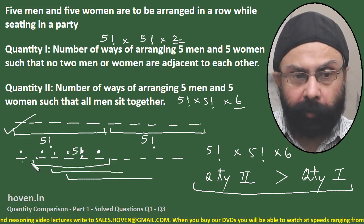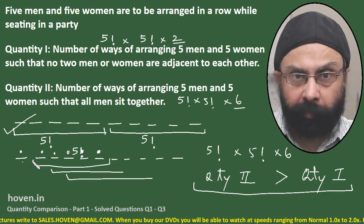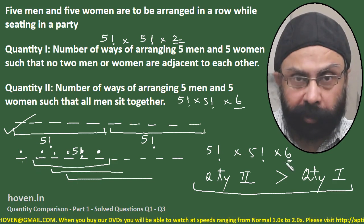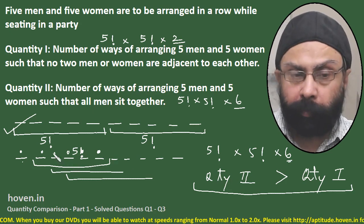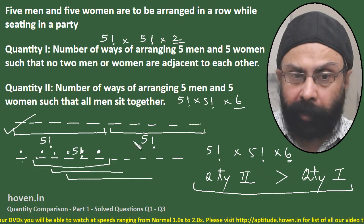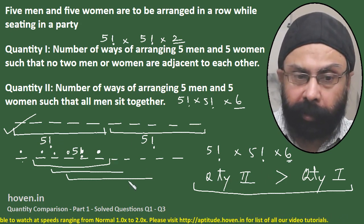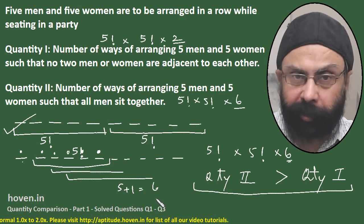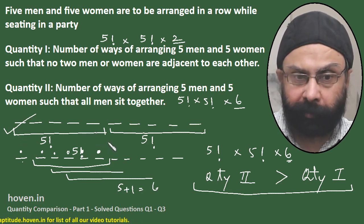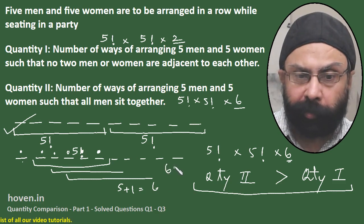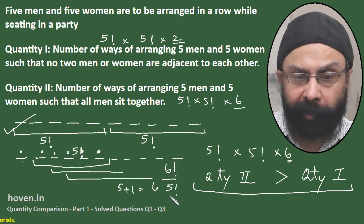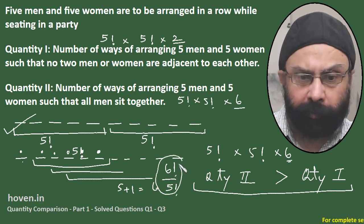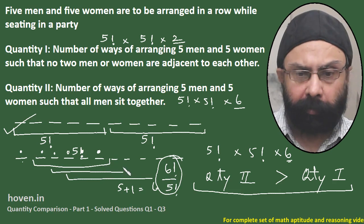As mentioned in textbooks, an alternative approach is to treat all 5 men as one group, reducing the problem to arranging 6 units (the men's group plus 5 women). The number of ways is 6! for the units, and within the group 5! arrangements for the men, giving 6! × 5! — which confirms the factor of 6.